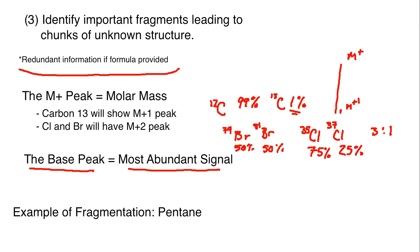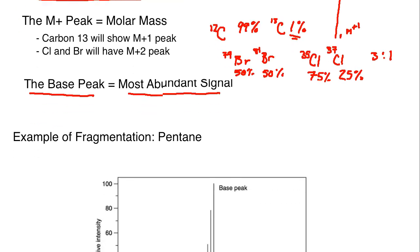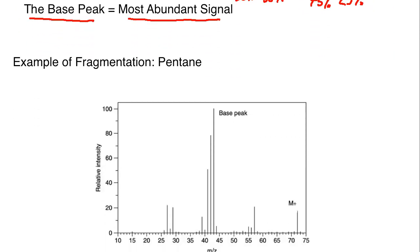The M+ peak can be the base peak, but it tends to be a rather rare occurrence. Usually there's another peak that is going to be the most abundant signal, and by abundant we mean going up along the relative intensity. As you're going up along the y-axis here, the peak that hits the highest relative intensity is going to be the base peak.